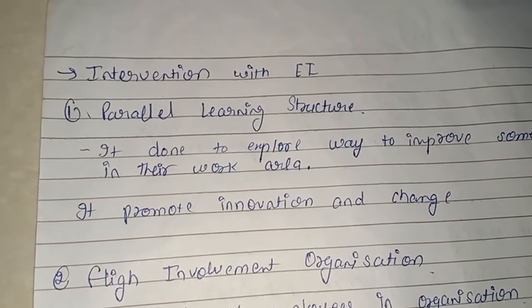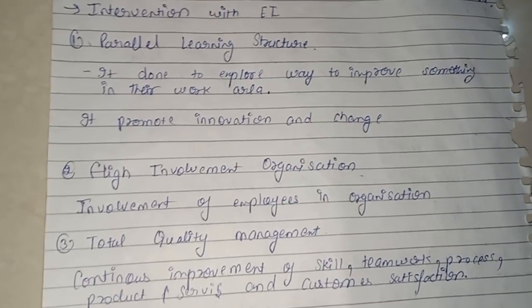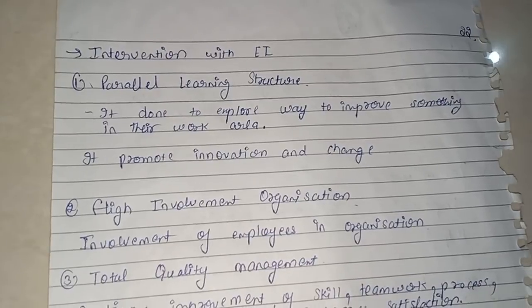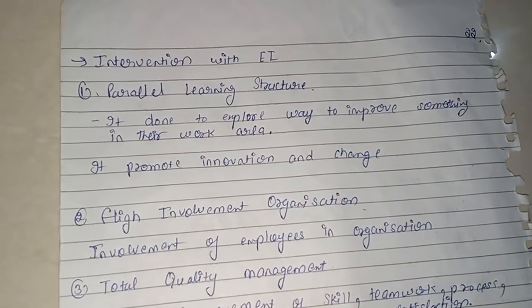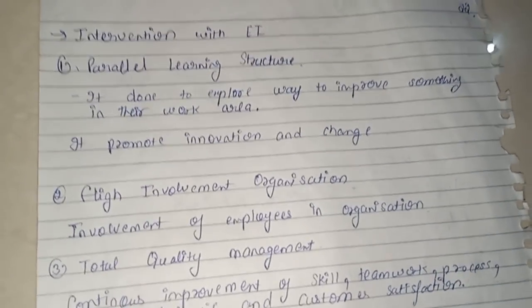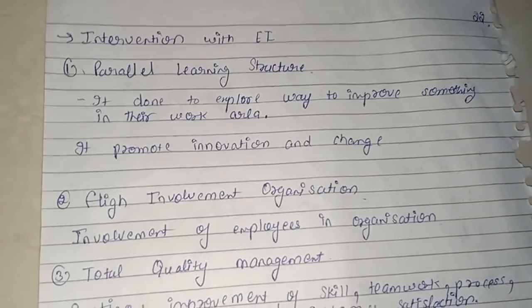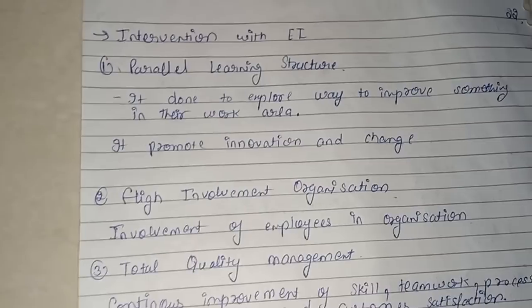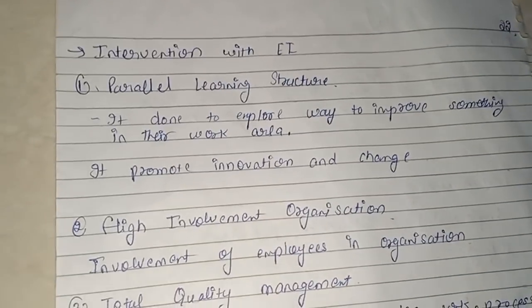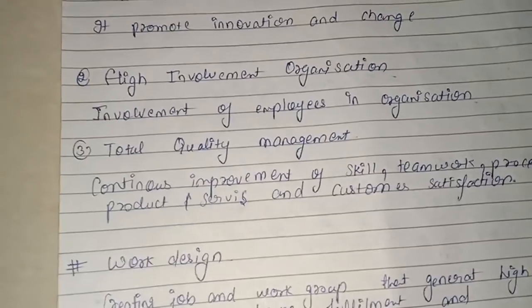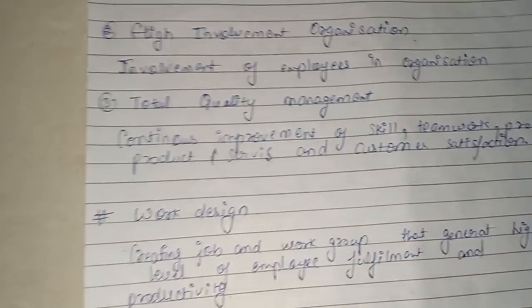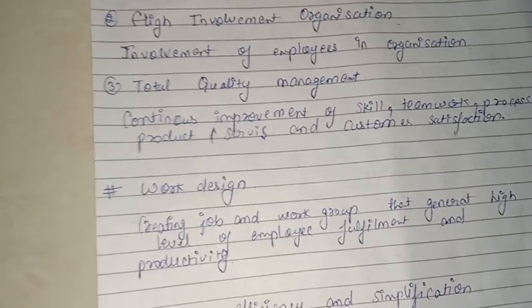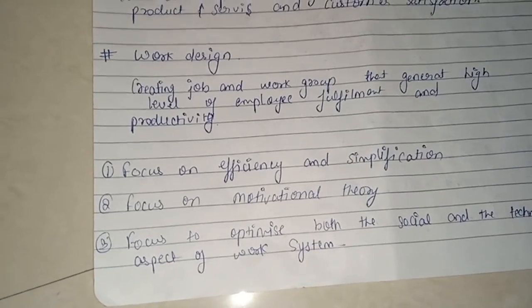Interventions with employee involvement include three types: parallel learning structure, high involvement organization, and total quality management. In parallel learning structure, intervention is done to explore ways to improve something in a particular work area — for example, a sales manager going outside and discussing innovations within their department, generating new ideas at the same level. High involvement organization refers to the whole organization having employee involvement in management.